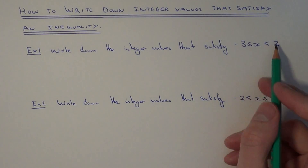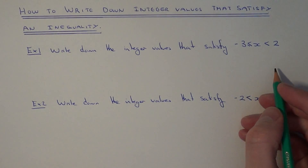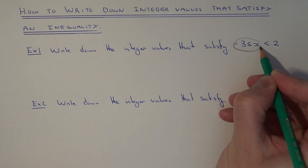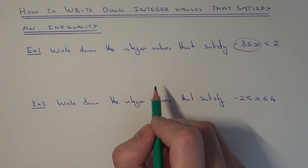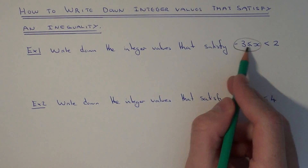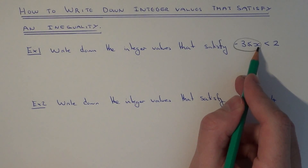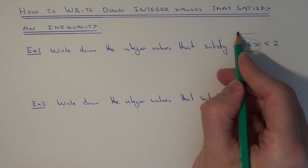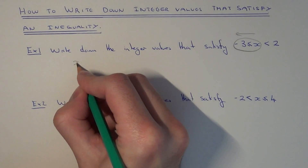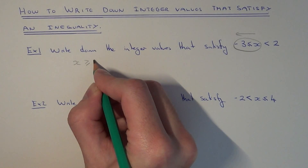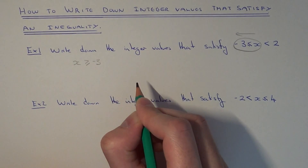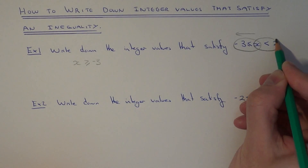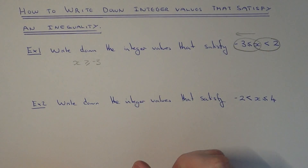So we need to think about what this means. The first part of the inequality is minus 3 is less than or equal to x. This actually means x can be a value more than or equal to minus 3 if you read it backwards. So x can be a number more than or equal to minus 3. And then the other part of the inequality is x is less than 2.